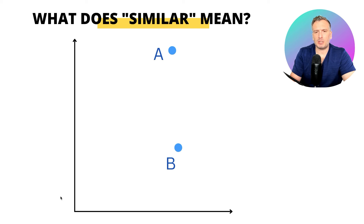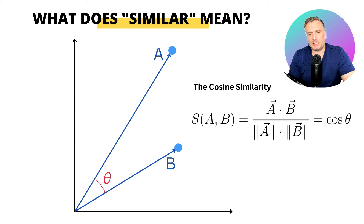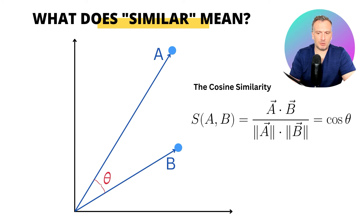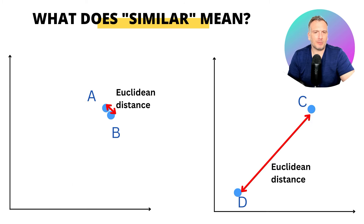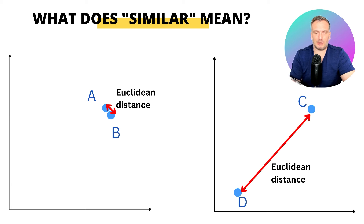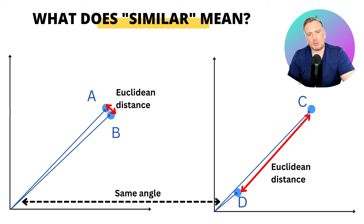Another metric is the cosine similarity metric. It is very similar to the dot product. The dot product considers both the magnitude and the angle between the two vectors, while the cosine similarity only considers the angle between the two vectors. For example, we have A and B very close to each other in Euclidean distance, and we have C and D very far apart in Euclidean distance.